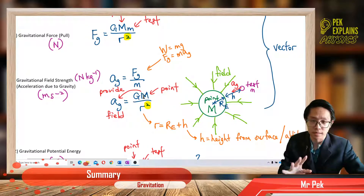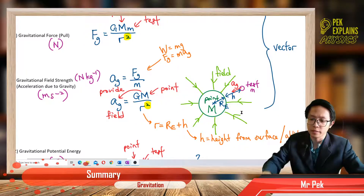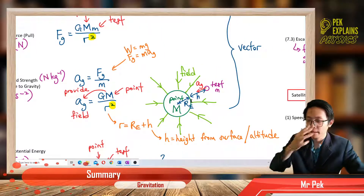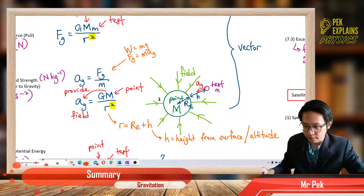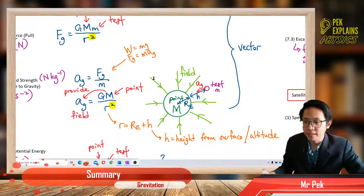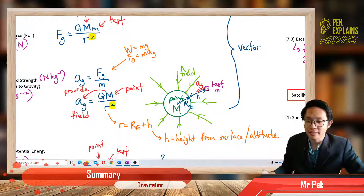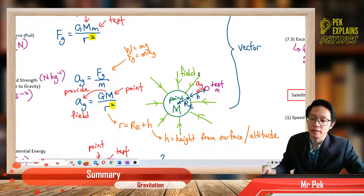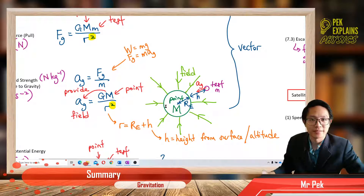We use the point mass — we don't use the test mass. The point mass provides the gravitational field. This is the point mass. This point mass provides the gravitational field around it. And this is the test mass — it is inside the gravitational field of the point mass.